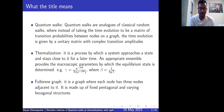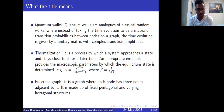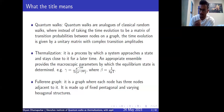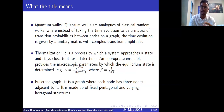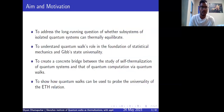An appropriate ensemble provides microscopic parameters by which the equilibrium state is determined — for example, the Gibbs state. The fullerene graph is a graph where each node has three adjacent nodes to it, and it is made up of pentagonal and varying hexagonal structures. You will see in some coming slides what I mean by fullerene graph in more detail.